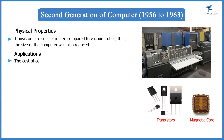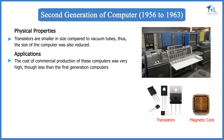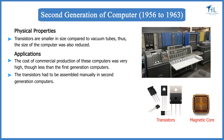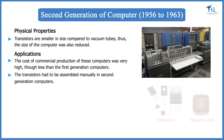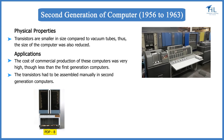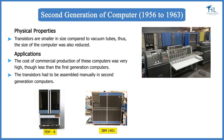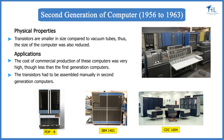The transistors are smaller in size compared to vacuum tubes, so the size of the computer was also reduced. The cost of commercial production was very high, though less than the first generation computers. The transistors had to be assembled manually in second generation computers. Examples of second generation computers are the PDP-8, IBM-1401, and CDC-1604.